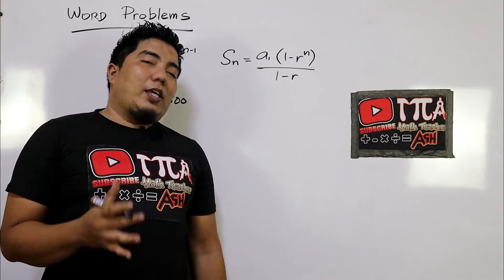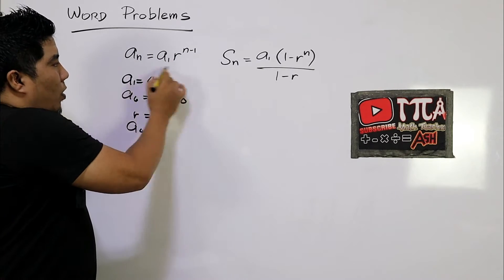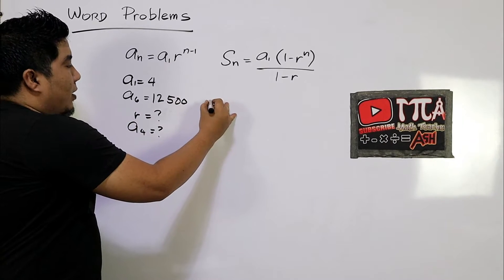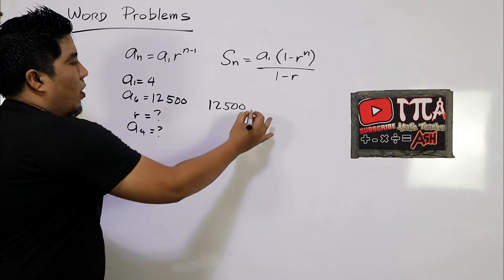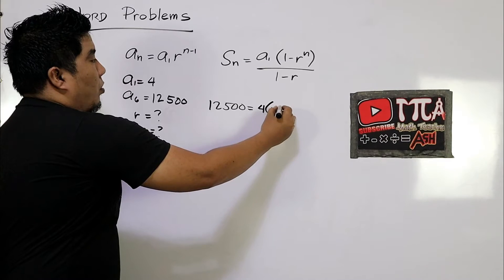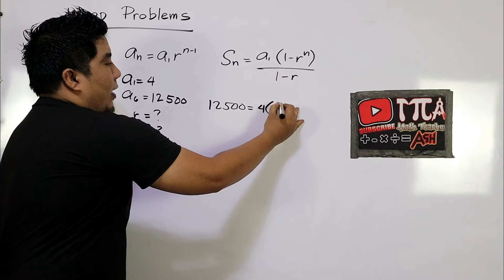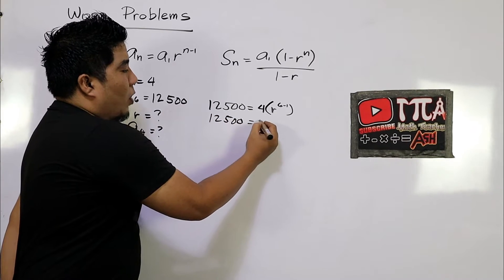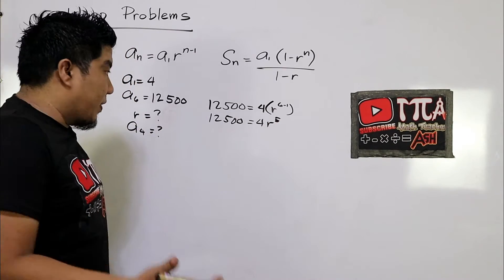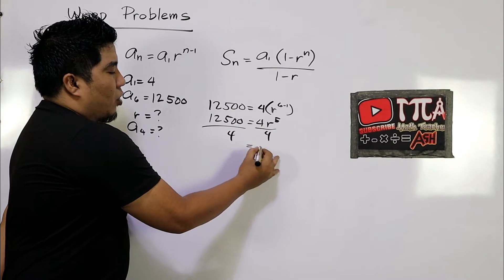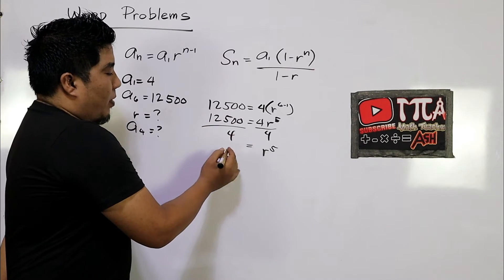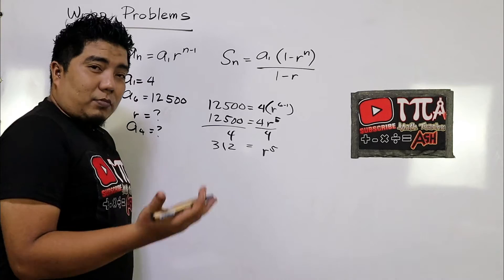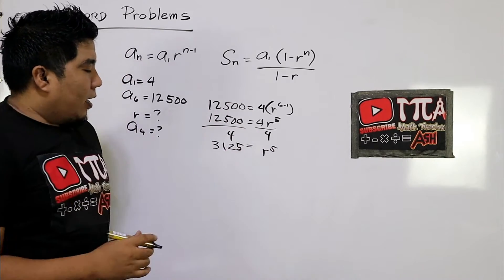We need to solve first our common ratio. We can apply our given values in the formula. So our A sub n, which is A sub 6, is 12,500. Our first term is 4, our r is unknown, and our n, since we are talking about six terms, that is 6 minus 1. Simplifying, that gives us 12,500 is equal to 4 times r to the fifth power, because 6 minus 1 is 5. So we divide both sides by 4, giving us 3,125 equals r to the fifth.